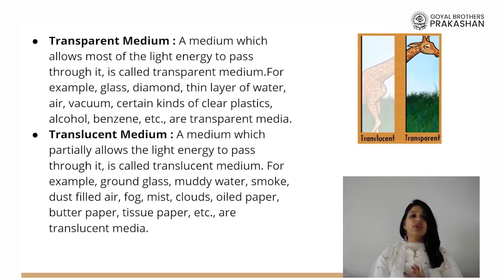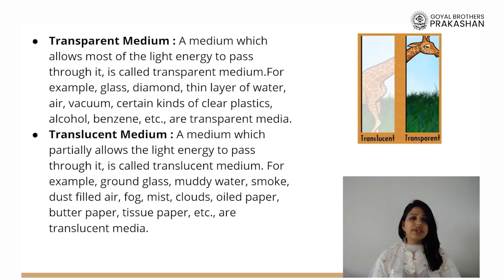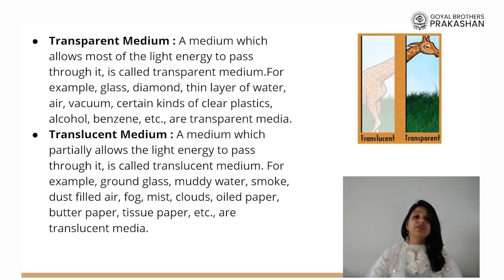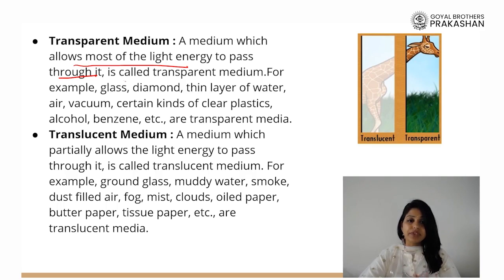Let us now talk about other kinds of medium, such as transparent medium. We have all seen windows made out of glass, and through those glass windows we are able to see what is happening on the other side. Why? Because light can pass through these windows. Transparent mediums are those mediums through which the light energy passes completely — it allows the light energy to pass through it very easily and completely.